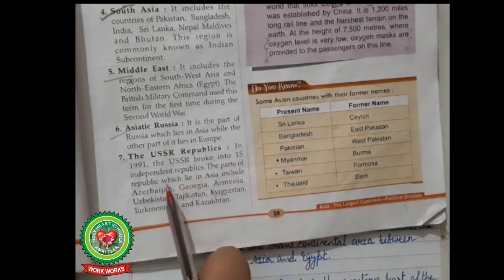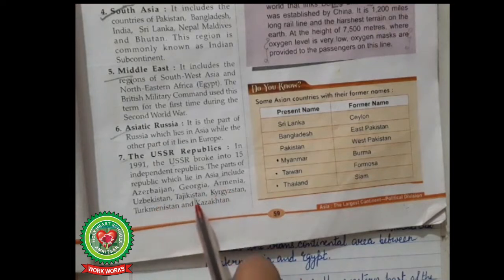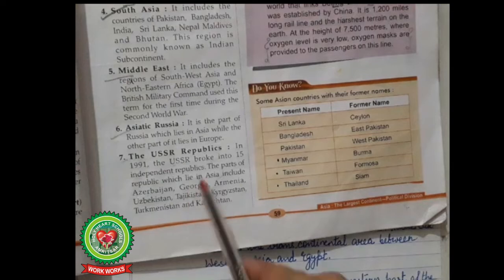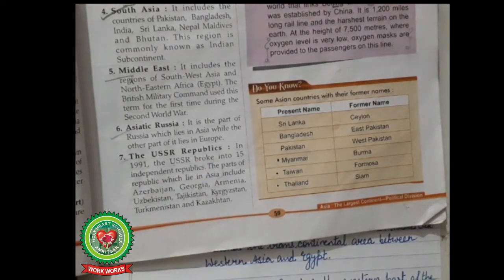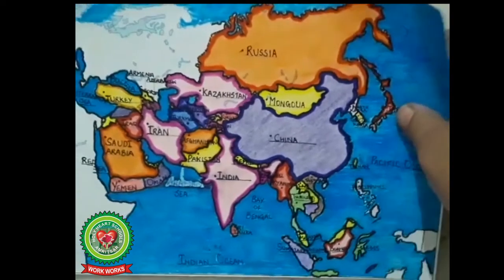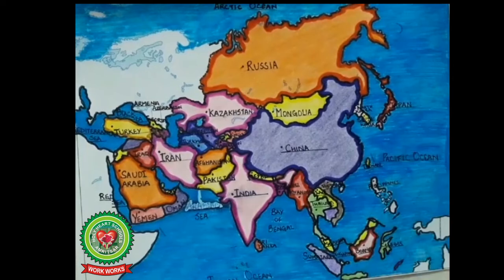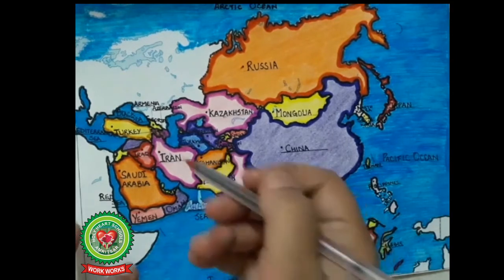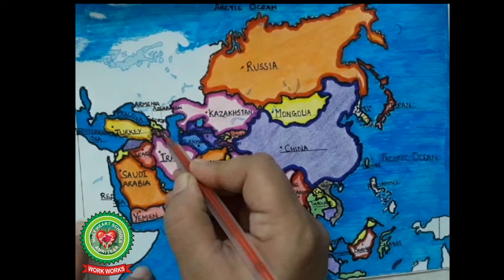The parts of the republics which lie in Asia include Azerbaijan, Georgia, Armenia, Uzbekistan, Tajikistan, Kyrgyzstan, Turkmenistan, and Kazakhstan. Let's understand all the USSR republic countries through map — take out your political map of Asia. Today we are going to focus on the USSR republic countries, which consist of eight countries. Number one is Azerbaijan.